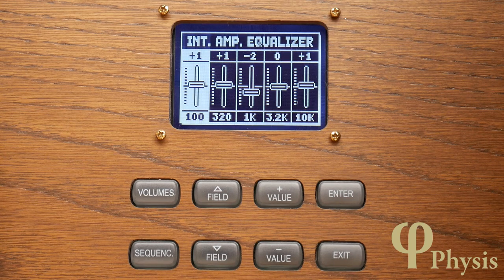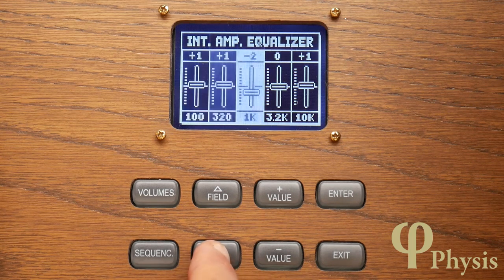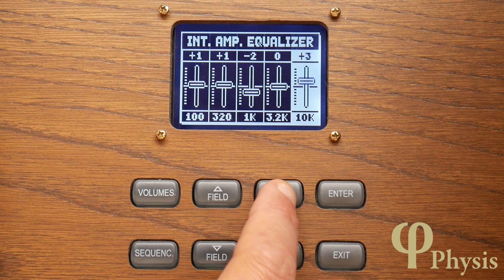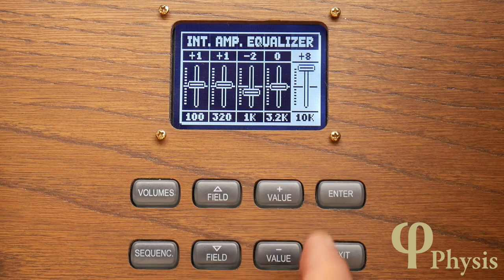Each slider controls the level of frequencies ranging from 100 Hz up to 10 kHz, that is from the bass to the treble. And there's a range of 8 dB either way on these sliders.